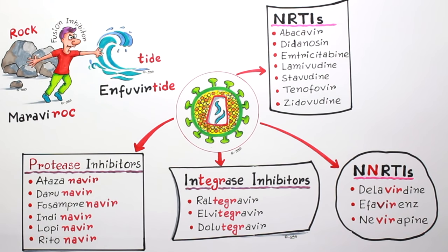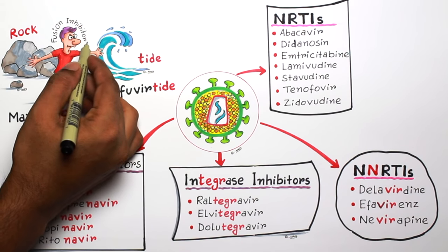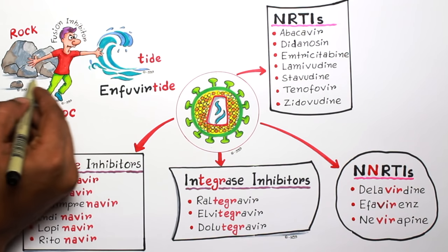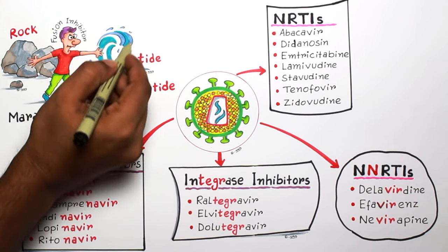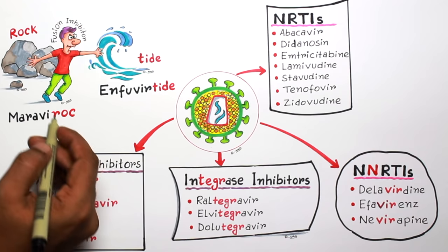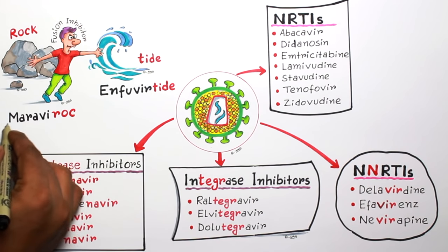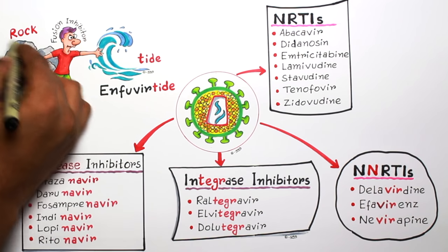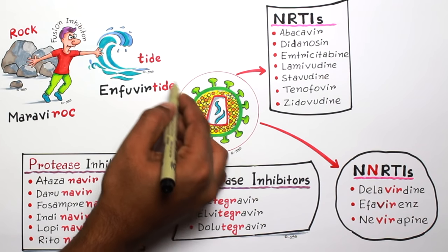Let's start with the fusion inhibitors. Here you can see a man trying to inhibit the fusion between the rock and the tide on the seashore. The first drug is maraviroc, which sounds like 'rock', and the second drug is enfuvirtide, which sounds like 'tide'. Just remember this picture.